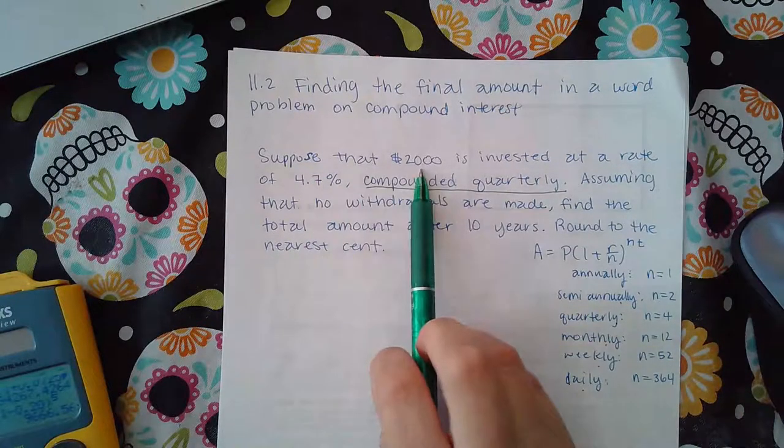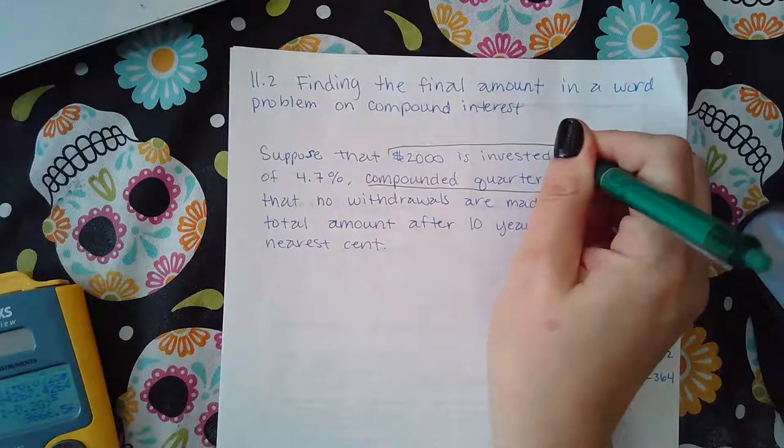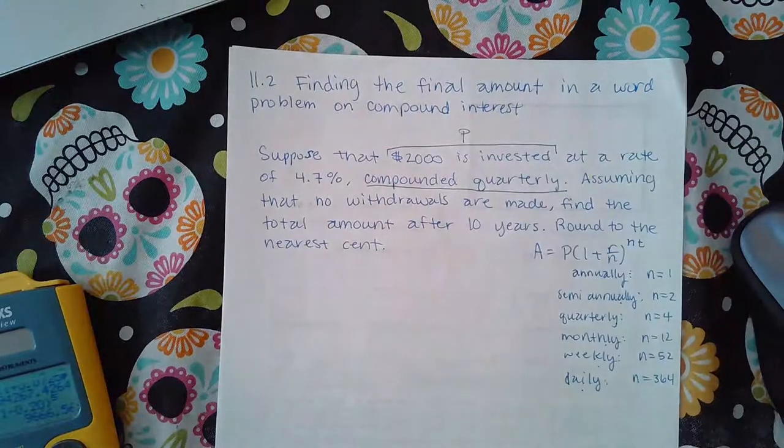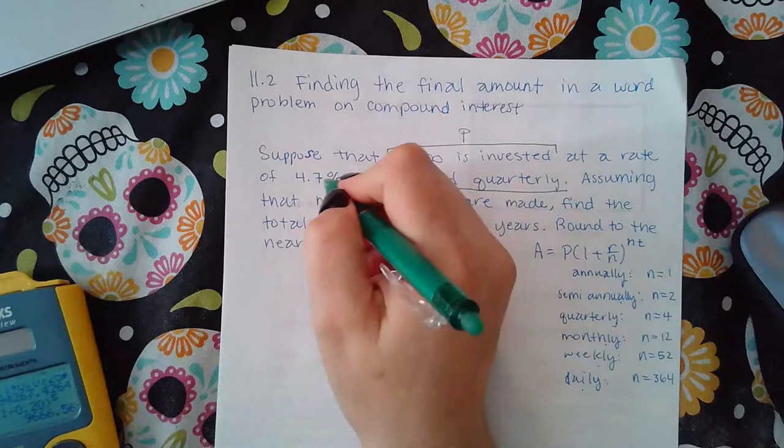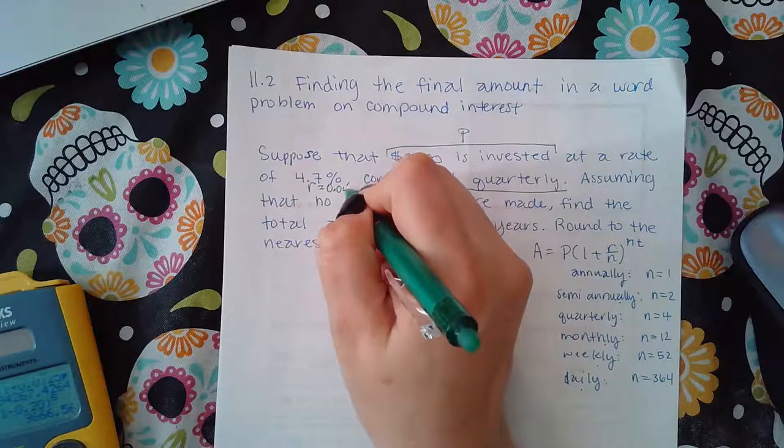So it says, suppose that this much is invested, which means that's what I'm going to start with, which means that's going to be my P value at the rate of 4.7%. So that's my R. And if you put it in a decimal, it's 0.047.